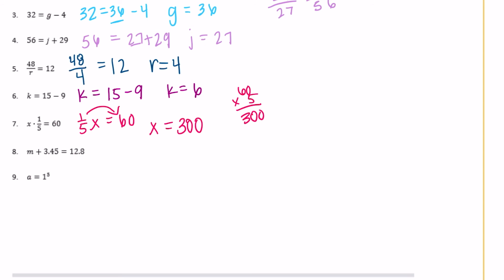Number 8: m plus 3 and 45 hundredths is equal to 12 and 8 tenths. So something plus 3 and 45 hundredths gets us 12 and 8 tenths. So we can subtract 3 and 45 hundredths here, and then that means we can subtract 3 and 45 hundredths from the other side. So let's do 12 and 8 tenths minus 3 and 45 hundredths. Remember from 5th grade, it's really important—you have to line up the decimal point. If your place values aren't aligned, you're going to get the wrong answer.